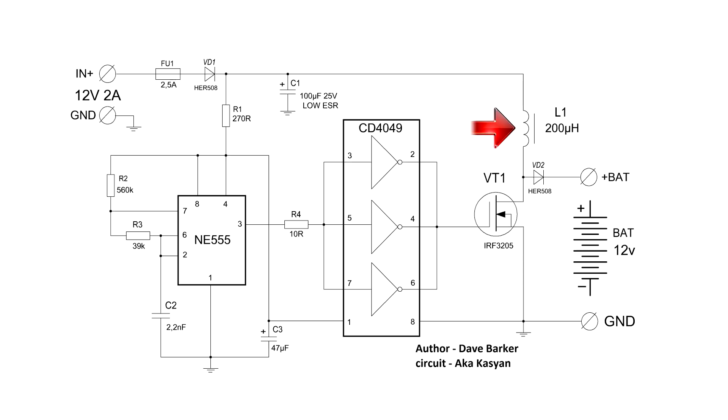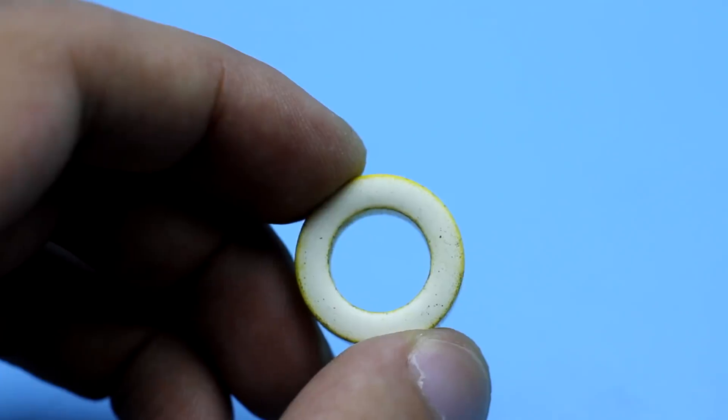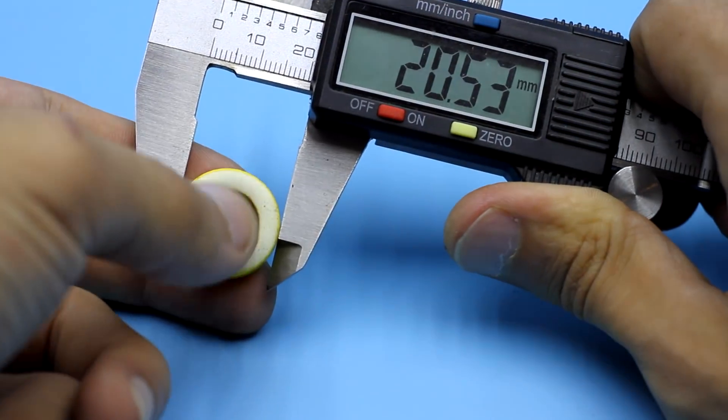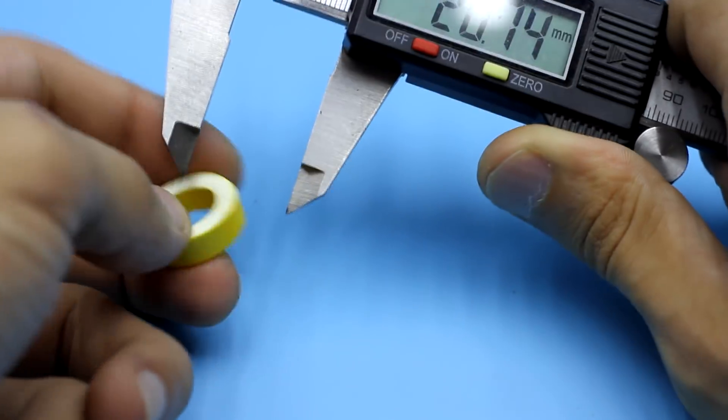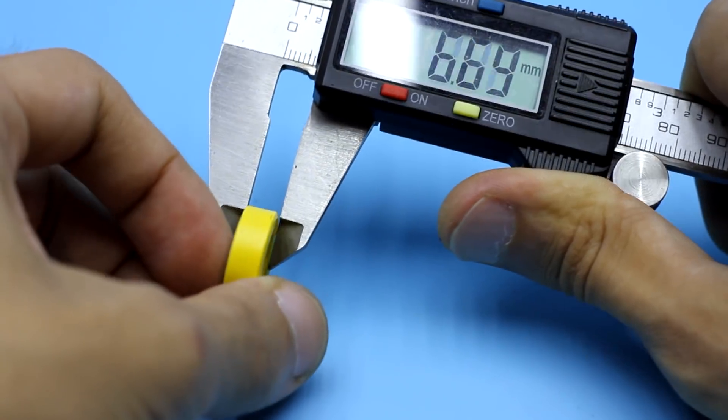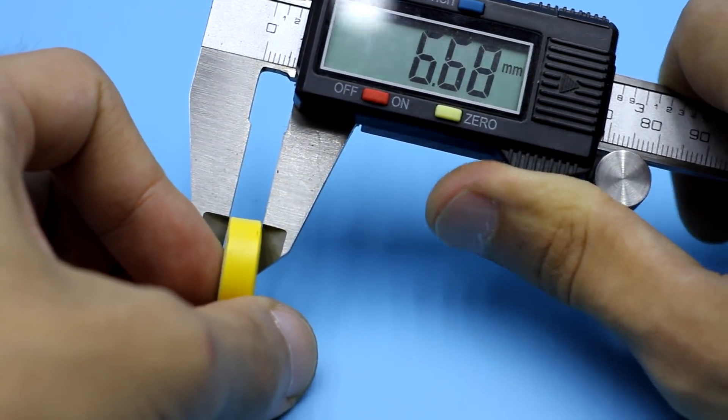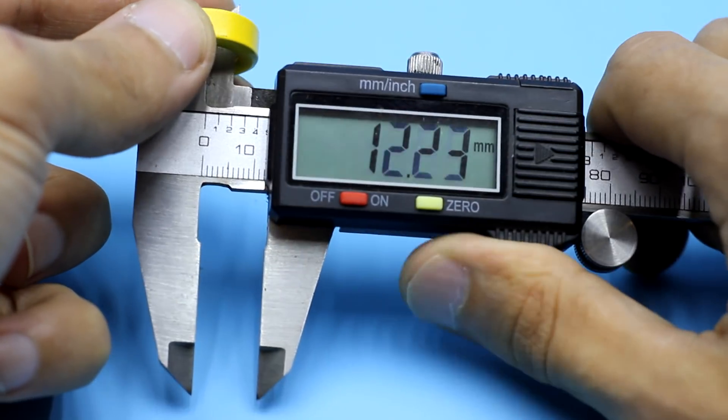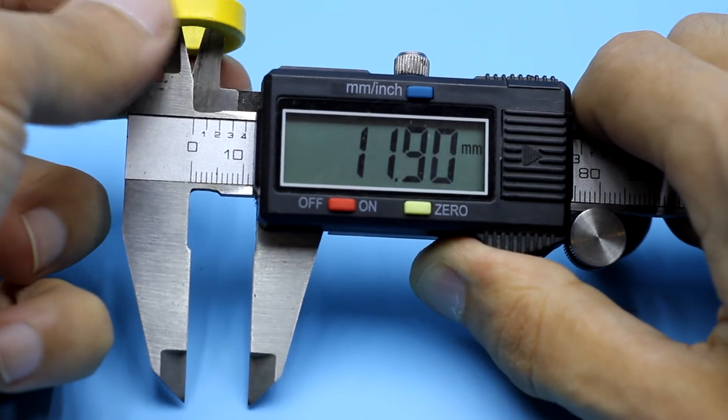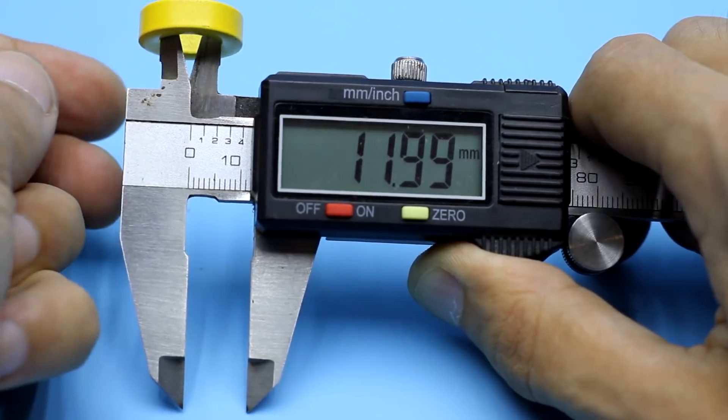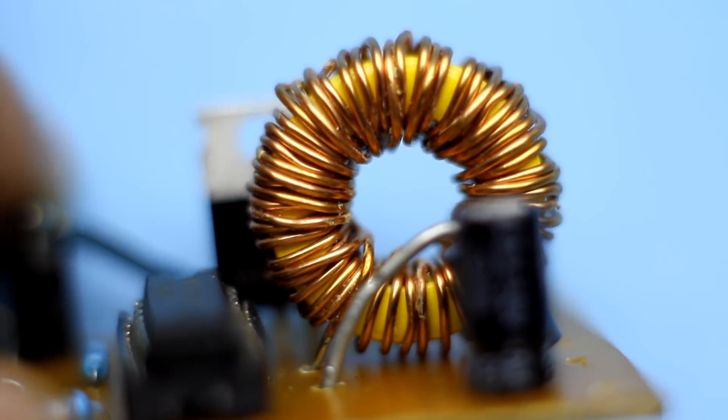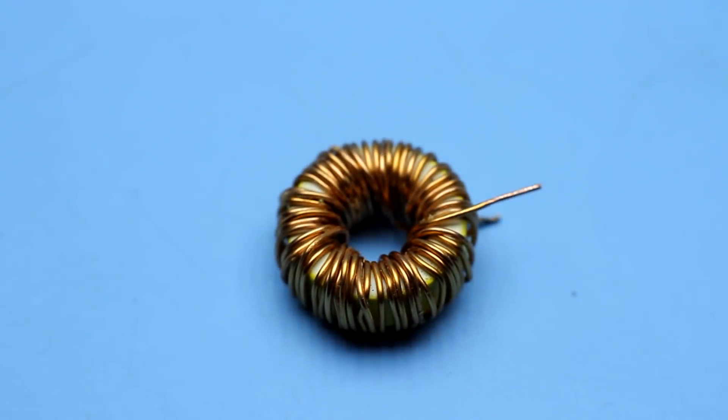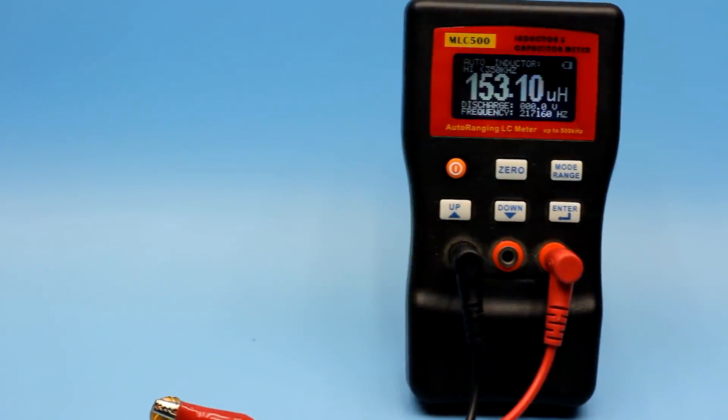The throttle has an inductance of about 200 microhenry. Wound on a ring of powered iron. They can be found in computer power supplies. The sizes of my ring are now in front of you. It is wound by a wire of 1 mm. The number of turns should be 60. But the wire was a little short and the inductance turned out slightly less.